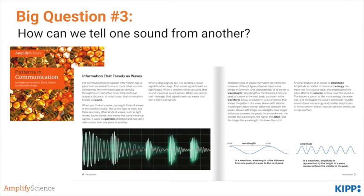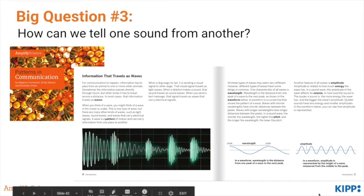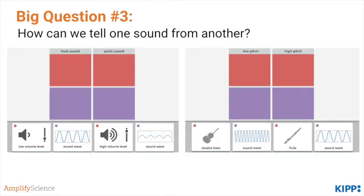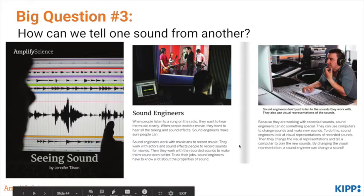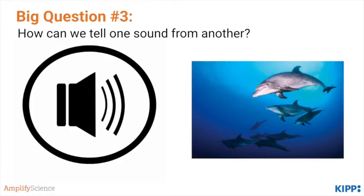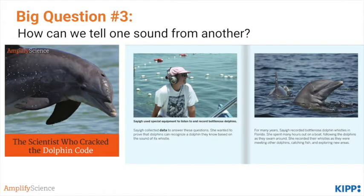Next, students return to the reference text Patterns in Communication to learn more about the parts of a wave. They use a modeling tool to sort different types of sounds into loud and quiet with high and low amplitudes, and low-pitched and high-pitched with short and long wavelengths. Students read the book Seeing Sound, where they're introduced to how different professions use sound visualizations in their work, such as sound engineers, doctors, or scientists. Students then listen to the dolphin whistles again and identify higher and lower-pitched noises as well as differences in volume. They also read The Scientist Who Cracked the Dolphin Code, learning how scientists used waveform pictures to distinguish between dolphin calls.